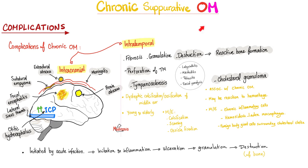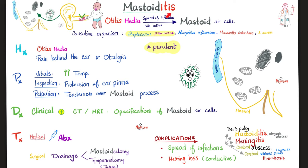Chronic suppurative otitis media can also be complicated with mastoiditis. Otitis media can spread extracranially and intracranially. What happened with mastoiditis? I had otitis media, then the infection spread via the aditus to the mastoid antrum into the mastoid air cells. The most important organism is Streptococcus pneumoniae. Key word is purulent discharge. The patient presents with history of otitis media and pain behind or of the ear — otalgia. Oto means ear, algia means pain.